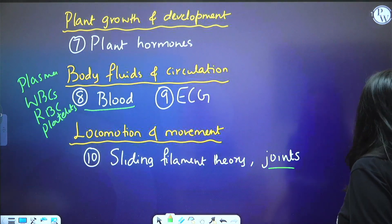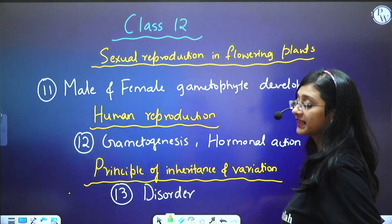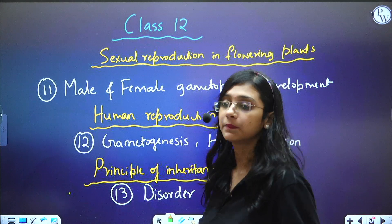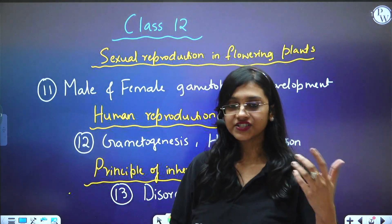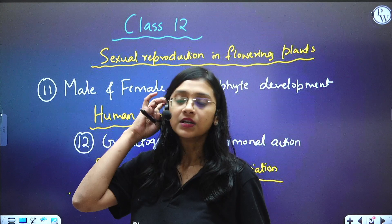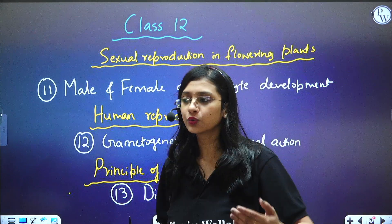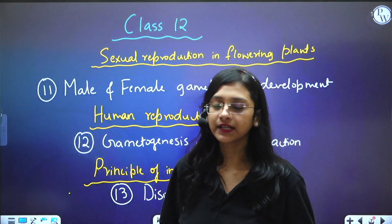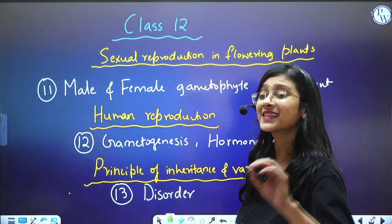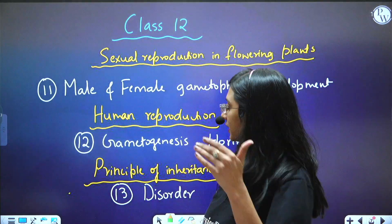Moving to class 12th biology chapters — from Sexual Reproduction in Flowering Plants, male and female gametophyte development is very important. That includes pollen grain development and embryo sac, which is the female gametophyte development. Continuous questions are being asked from this concept.